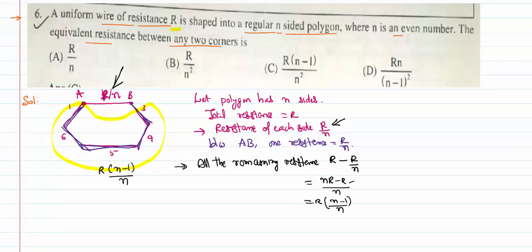It is very clear that this one side and the entire remaining part are in parallel with each other. Since the two resistors are in parallel, you know the formula for parallel resistance is r1·r2 / (r1 + r2), where r1 = r/n and r2 = r(n−1)/n.